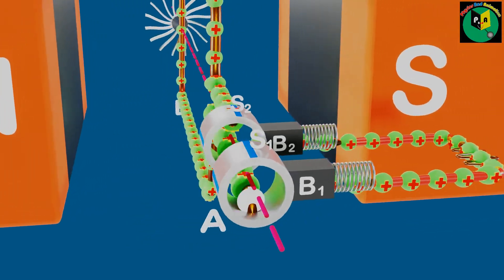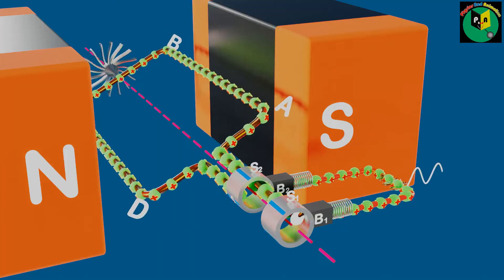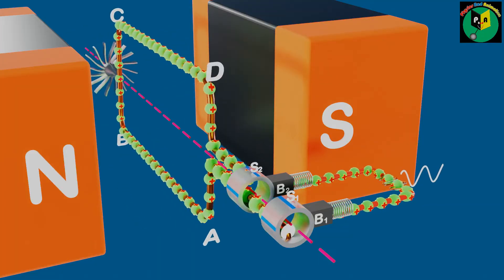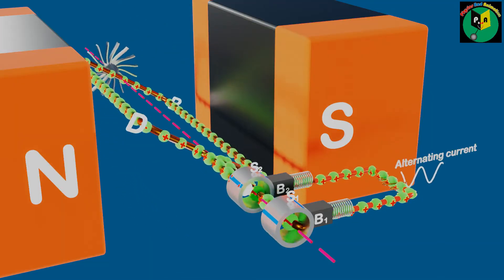In this way, we have created a simple AC generator that generates an electric current whose direction reverses in every half of the complete rotation and produces alternating current.